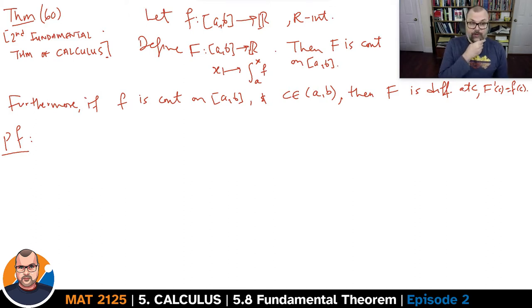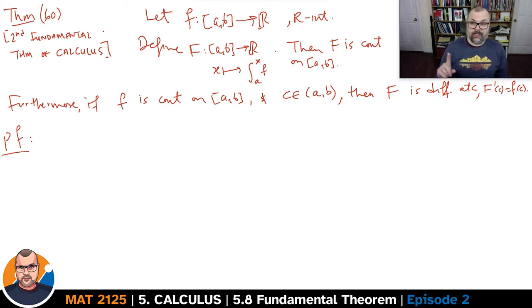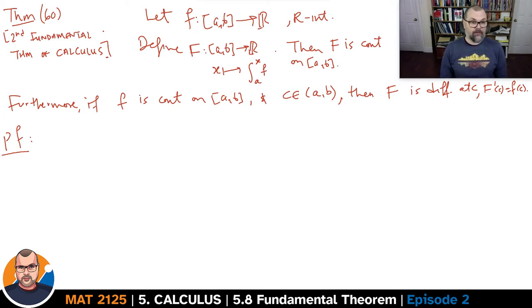So what do we need to show? We need to show, first of all, that the function uppercase F is continuous, and then second, that if little f is also continuous, then the derivative of big F will equal little f. So let's start by showing that big F is continuous.